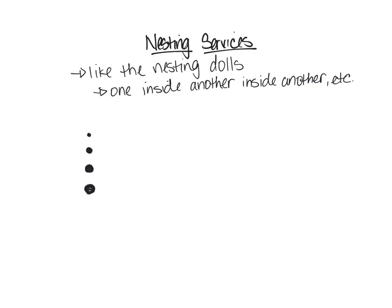The smallest settlement type is called a hamlet — though we don't use that term much in the US. We'd call it a little town. A local example of a hamlet-sized settlement today would be Salina.